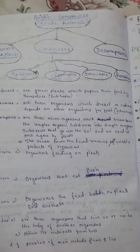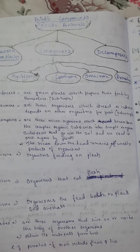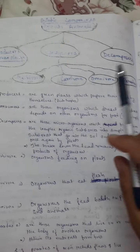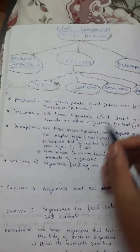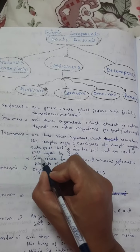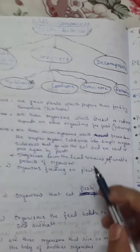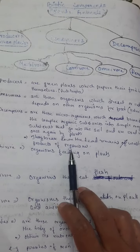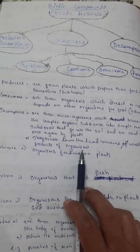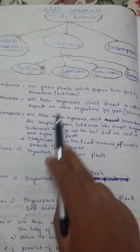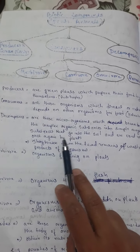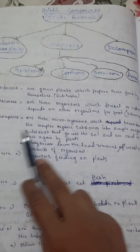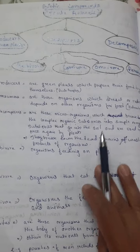Decomposers are the microorganisms which break down the complex organic substances into simple inorganic substances that go into the soil and are used once again by plants — that is, they turn into manure. Decomposers also break down the dead remains or waste products of organisms. This is the role or function of decomposers.